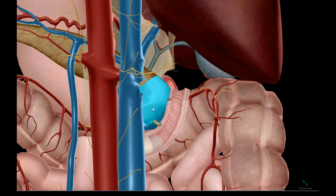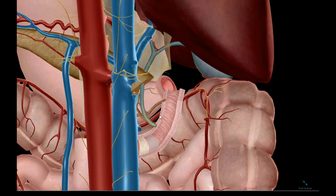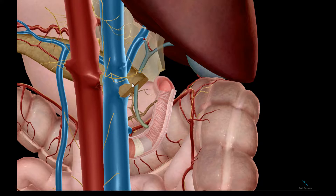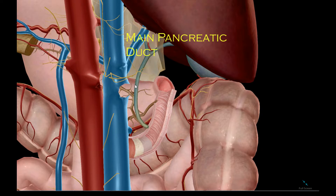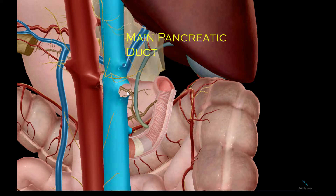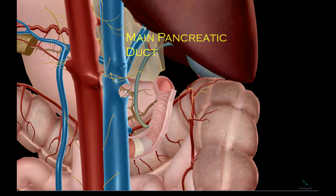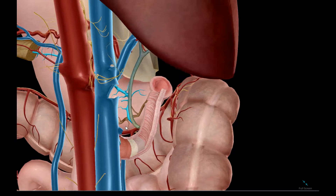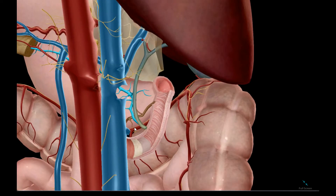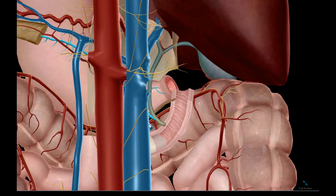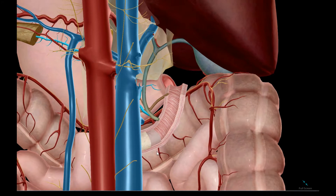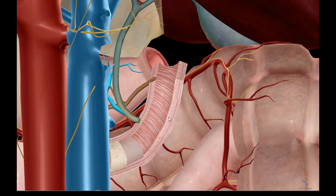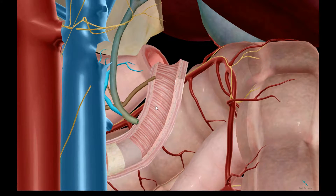If we dissect into the pancreas, we can see the main pancreatic duct here. We can also appreciate the circular folds of the small intestine.